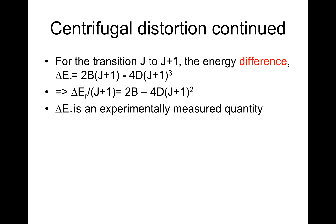Delta E is an experimentally measured quantity. A plot of delta E_R versus (J+1)^2 is linear. The intercept is 2B and the slope is 4D.